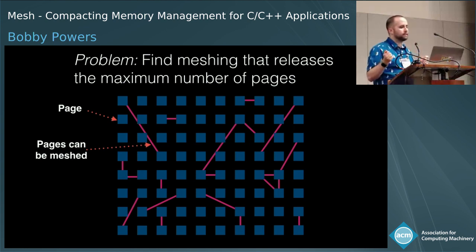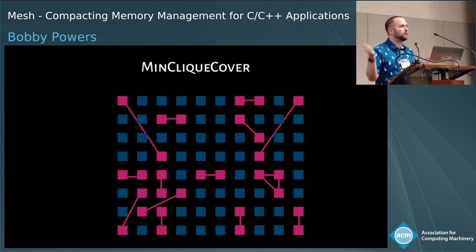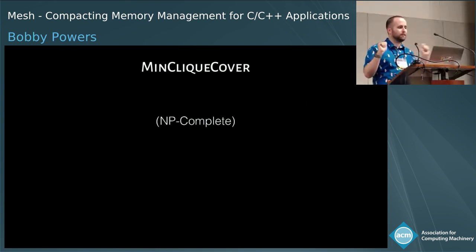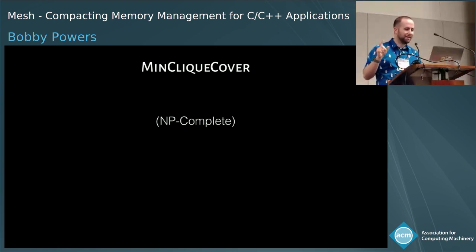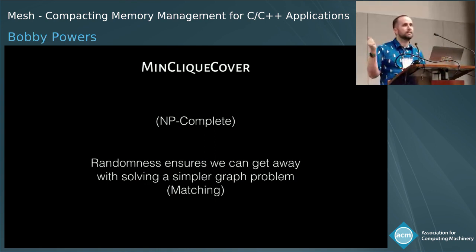We model the heap as a graph where each node is a partially full page, and we have an edge between pages if there is a meshing relationship — if we could mesh those two pages to reclaim memory. One way to solve this is through the related problem of min clique cover, which is alarming because it's a known hard problem. Luckily, due to our use of randomization and other details in the paper, we show we can solve the simpler graph problem of matching and still get a very good result in terms of pages freed back to the operating system.